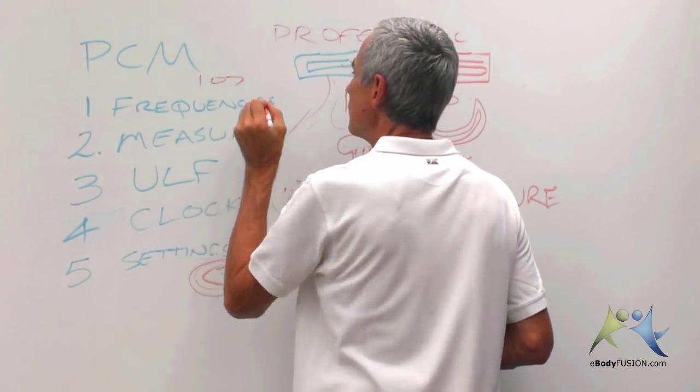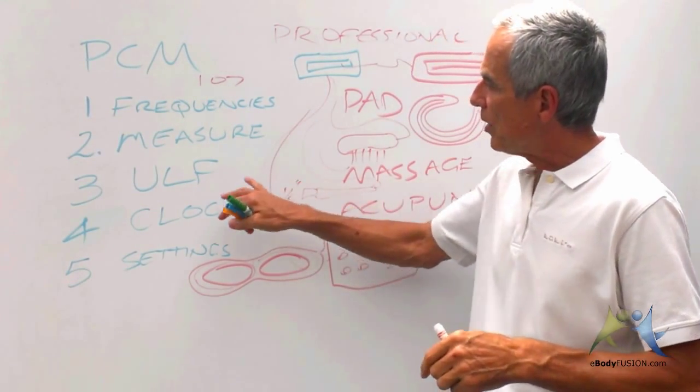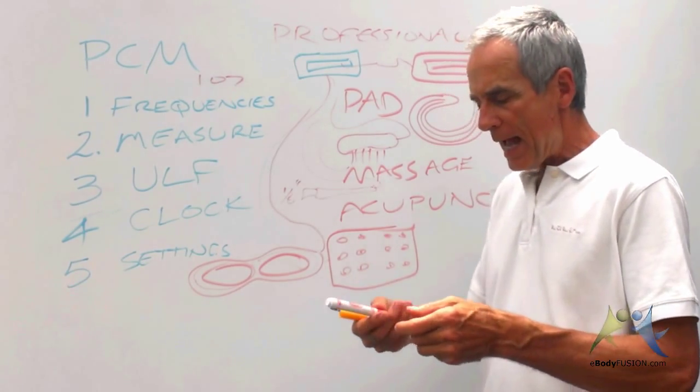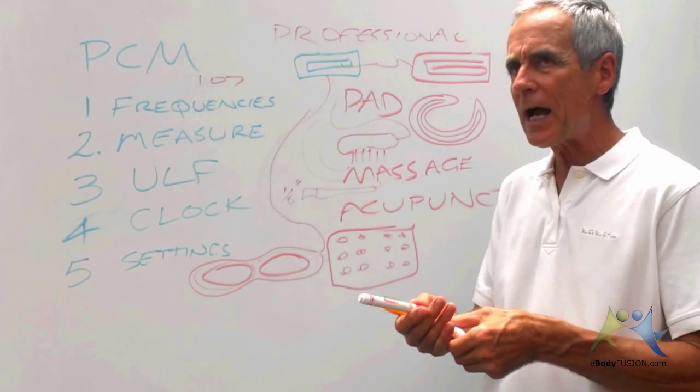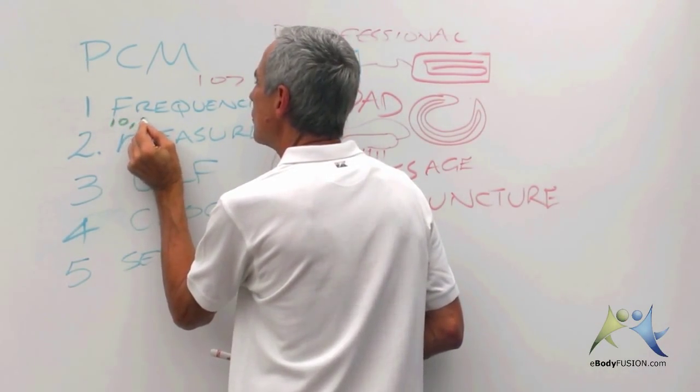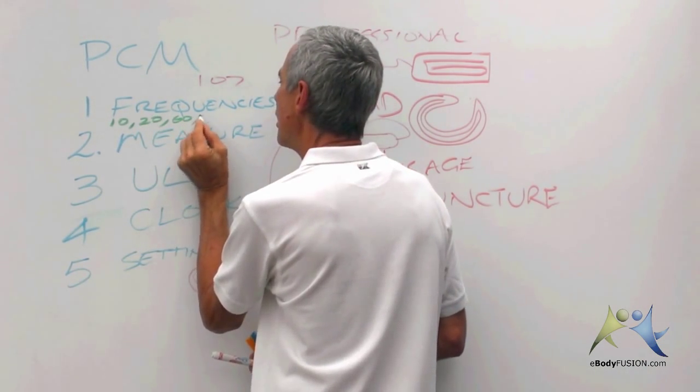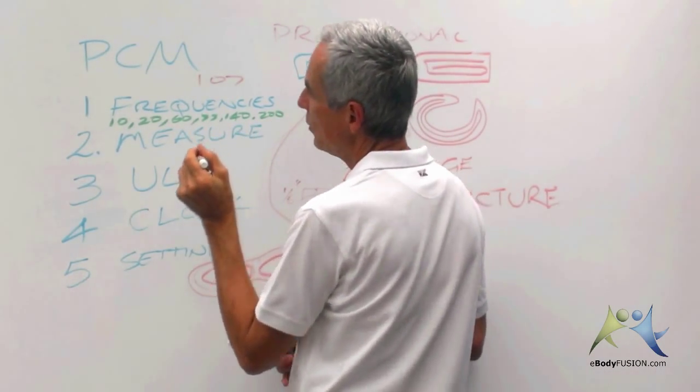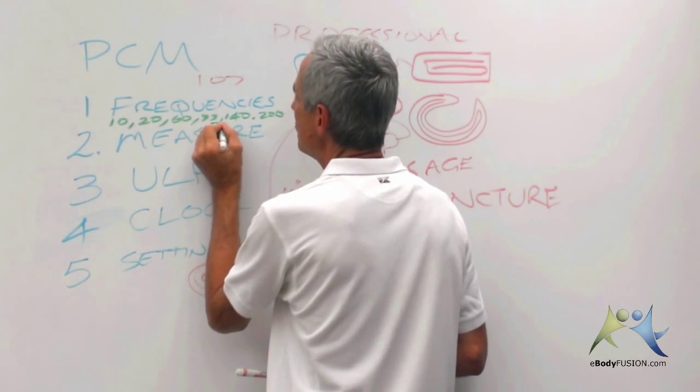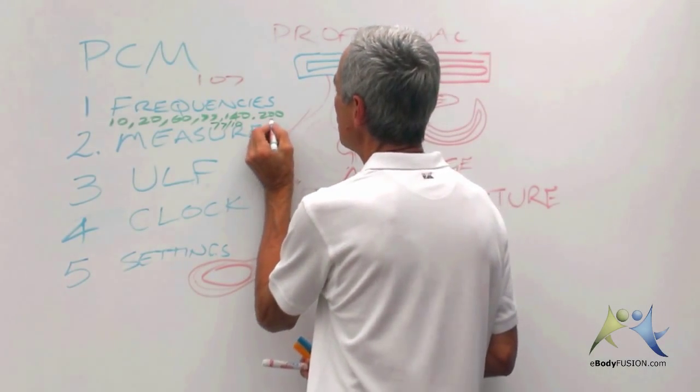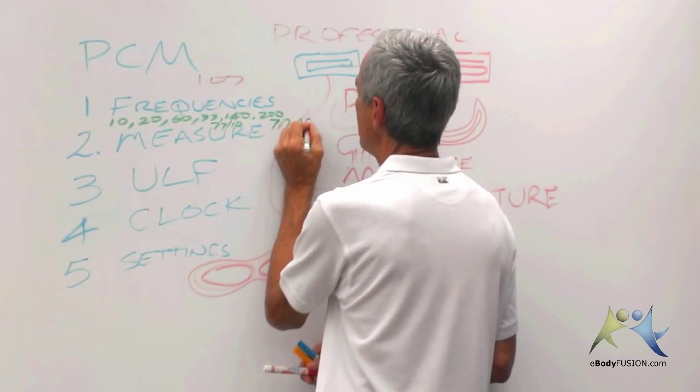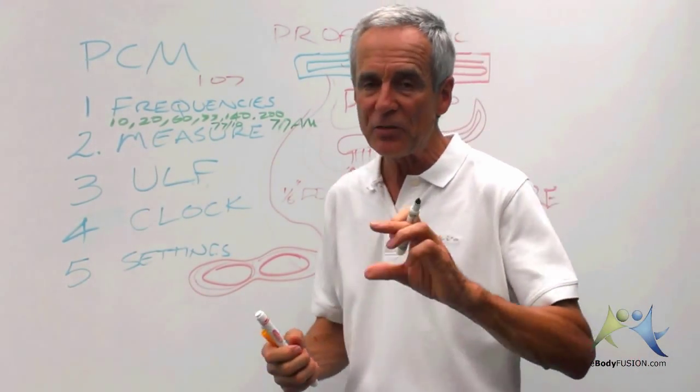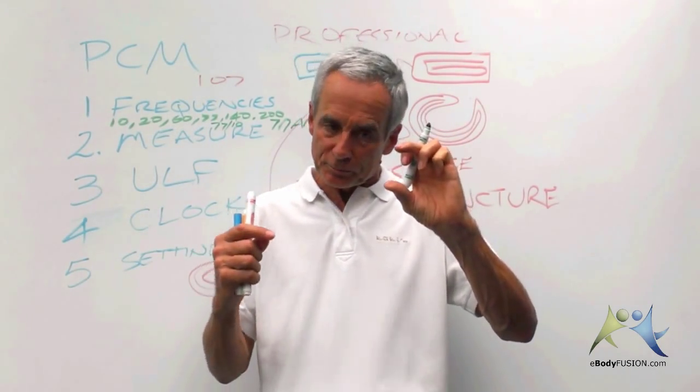For instance, there's 107 settings on the Diadence PCM. So there's a whole bunch of the ULFs from 1 hertz all the way to 9.9 hertz in 0.1 hertz frequencies. And in the frequencies, the preset frequencies, we have 10, 20, 60, 77, 140, 200 hertz. And we have some compound frequencies in there too. One is the 77-10, and the other one is the 77 AM, which means that it's turning off and on, off and on, off and on.